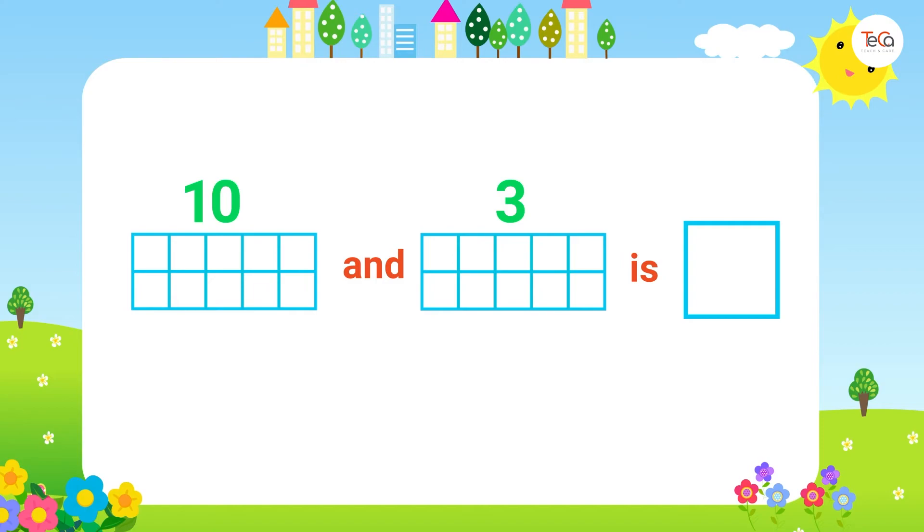Next, 10 and 3 is 13. We can draw 10 dots here, then 3 dots here. We have 13 dots that show number 13.